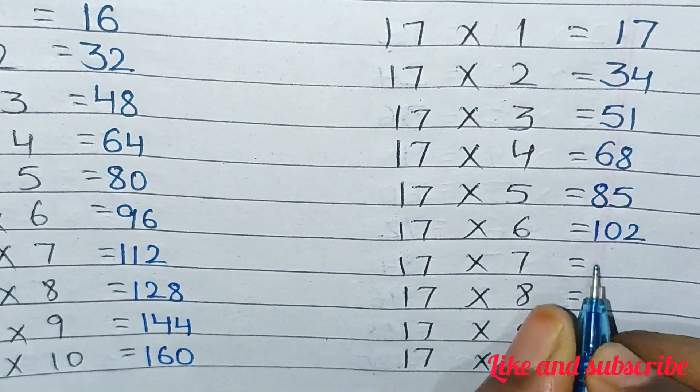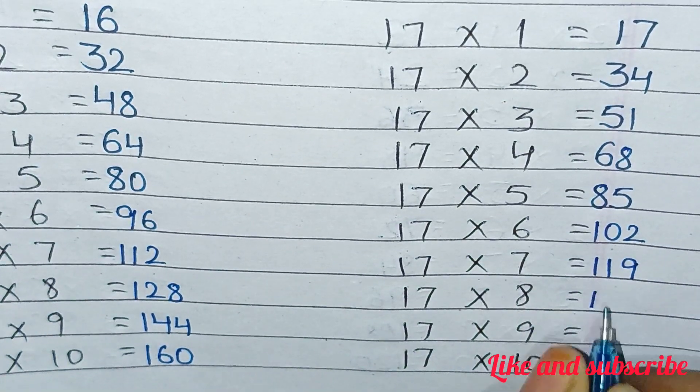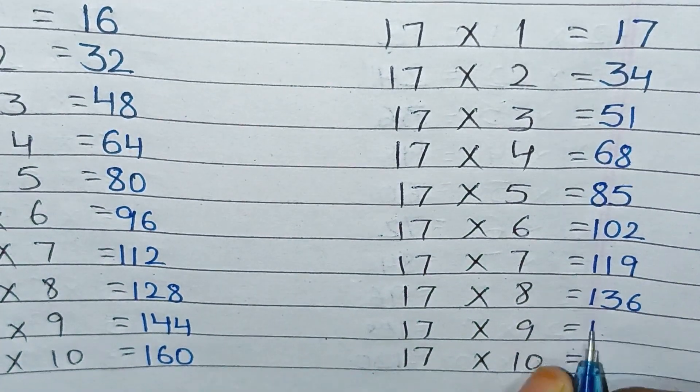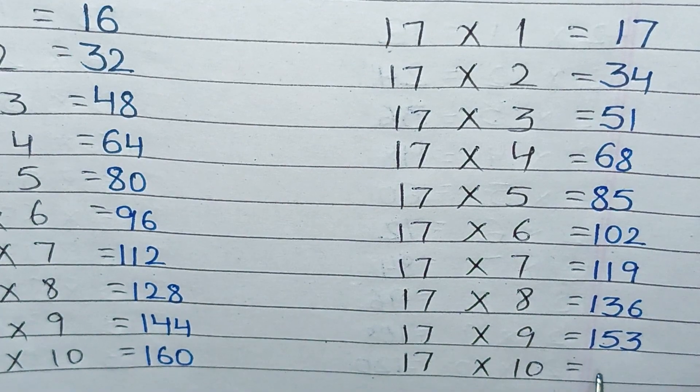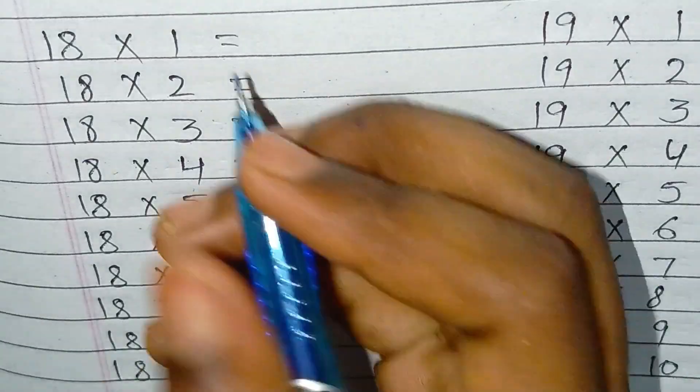17×6=102, 17×7=119, 17×8=136, 17×9=153, 17×10=170.